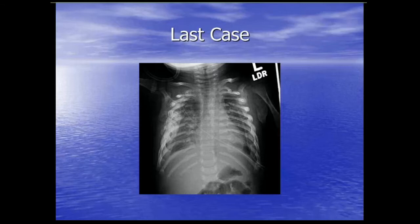This is a sad case of child abuse. You can see a series of posterior medial acute rib fractures bilaterally, some subacute or healing fractures bilaterally, and more chronic posterior medial fractures with well-formed callus. Posterior medial rib fractures are almost pathognomonic for child abuse — the mechanism is someone squeezing the chest and breaking the posterior ribs. Fractures of different ages is a very bad sign. Sadly, babies are the most susceptible.